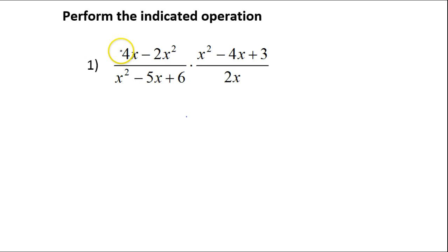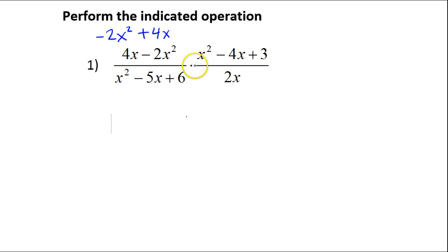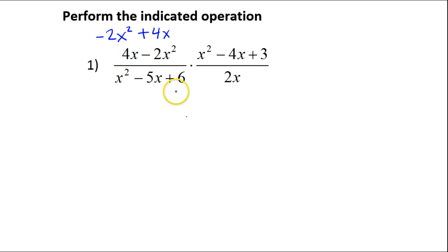In problem number one, the first thing I notice is that the numerator is backwards. Let's rewrite this in descending exponential order. For multiplication, that's really all there is to it — you just factor and cancel. There's no need for like denominators like we need for addition and subtraction.